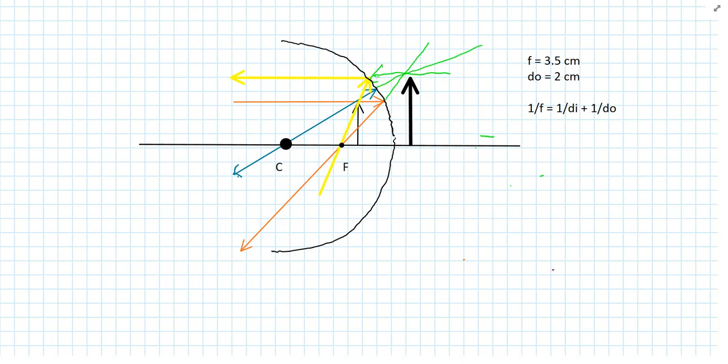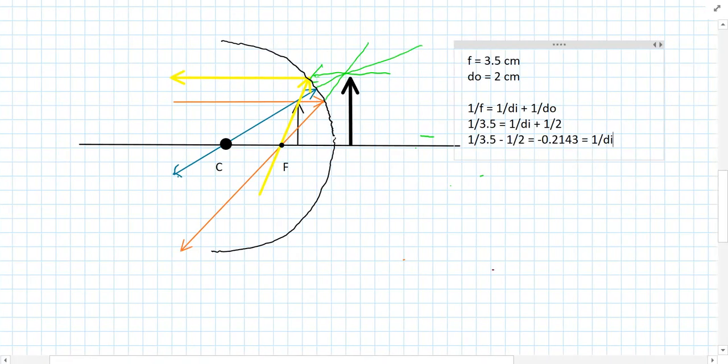So, we use the same mirror equation. 1 over f equals 1 over the image distance plus 1 over the object distance. So, we plug in the numbers that we've got. 1 over 3.5 equals 1 over di plus 1 half. Then we subtract 1 half from both sides, and that gives us a negative .214, which is 1 over di. Then we take the reciprocal of negative 2.1, and we get di, and that gives us di is negative 4.6, and the units would be centimeters.